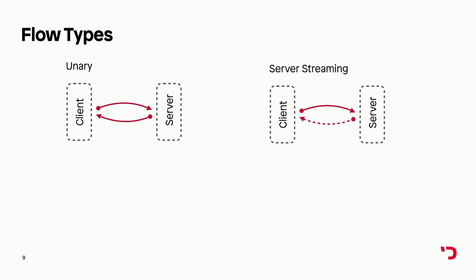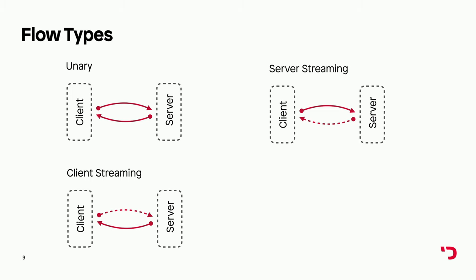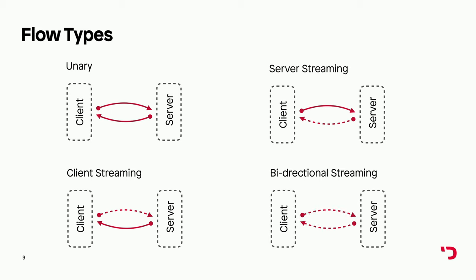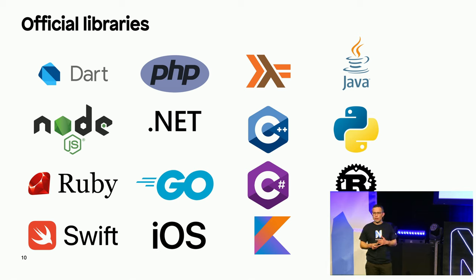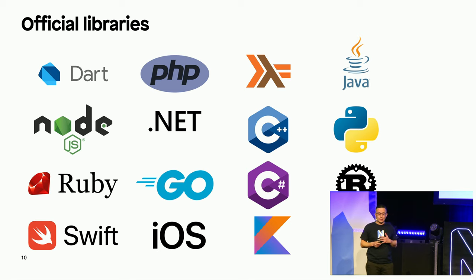gRPC offers four flow types: first, the unary type — one request, one response, like normal HTTP. Second, server streaming — one request, the server responds with a stream of messages consumed one by one. Third, client streaming — sending a stream of messages to the server and getting one response back. Fourth, bidirectional streaming — enabling real-time communication between client and server. gRPC also has official libraries for basically all major languages, and additionally has support for PHP.